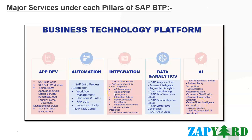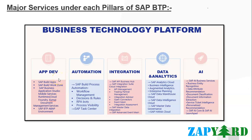SAP BTP is a technology platform that brings together data and analytics, artificial intelligence, application development, automation, and integration — all five pillars — into one unified environment. Each of these five pillars consists of multiple unique service offerings, which is a big topic in itself with a lot to explore. This should really excite you whether you are beginning your journey as an ABAP developer, onboarding integration development skills, exploring AI at BTP, or getting started with data analytics — all these pillars are quite interesting with their multiple unique service offerings.